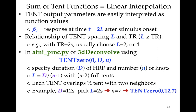In AFNI, you choose the tent function model using tent0 instead of block. The zero indicates the function goes to zero at the ends. The syntax is tent0(B, D, N), where D is the duration and N is the number of knots. The spacing between knots L equals D divided by N minus 1, and there are N minus 2 full tents. For example, if D is 12 seconds and you pick L equal to 2, you use tent0(0, 12, 7).